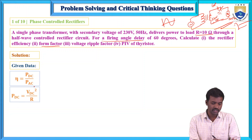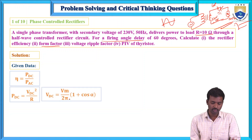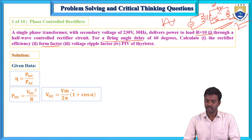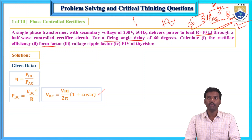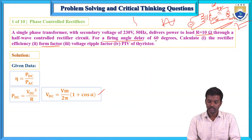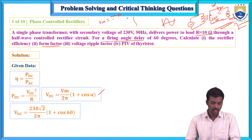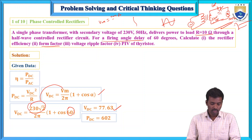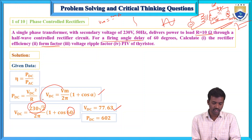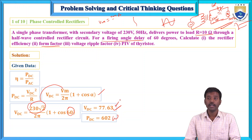For a half-wave rectifier, the average output voltage formula is: V_DC = V_avg = (Vm / 2π)(1 + cos α), where α equals 60 degrees and Vm equals V_RMS × √2, so V_RMS = Vm / √2. Substituting these values gives V_DC equals 77.63 volts. Then PDC equals 77.63 squared divided by 10, giving PDC equals 602 watts.